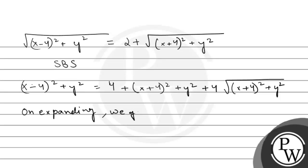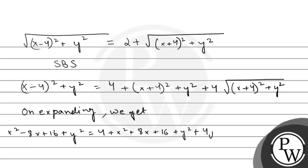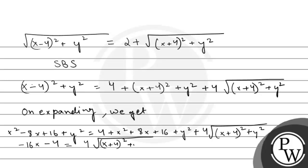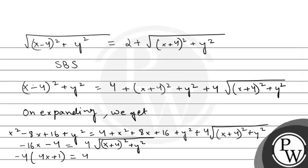On expanding we get: x² − 8x + 16 + y² equals 4 + x² + 8x + 16 + y² + 4√[(x + 4)² + y²]. After y² cancels and simplifying, we take −4 common on the left-hand side giving −(4x + 1) equals 4√[(x + 4)² + y²]. The 4 cancels out on both sides.